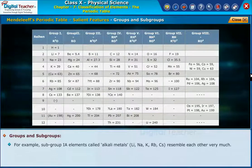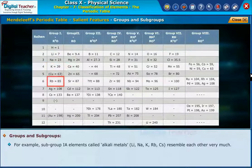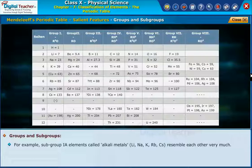For example, Subgroup 1A elements, called alkali metals — Lithium, Sodium, Potassium, Rubidium, and Caesium — resemble each other very much.